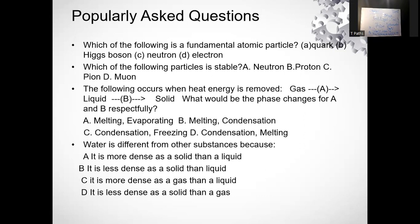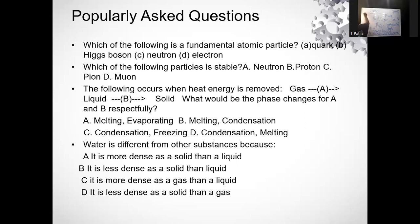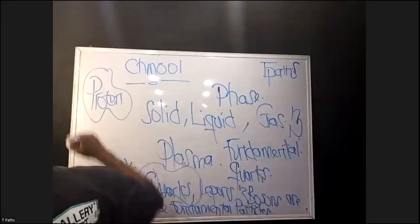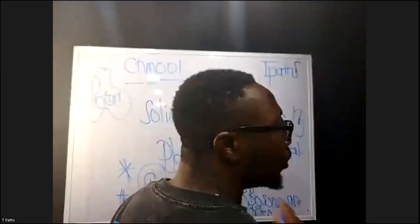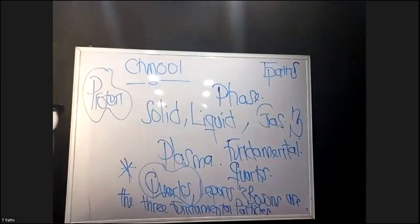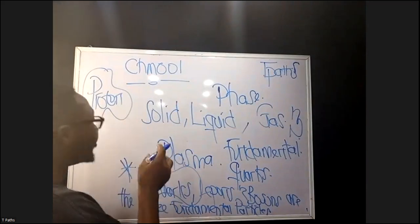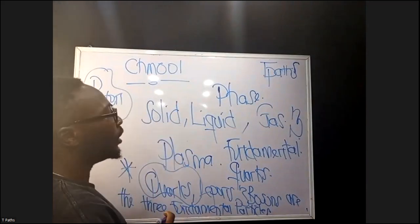The next question: which of the following particles is stable? Options are neutron, proton, pion, and muon. The answer is proton — proton is the most stable particle. Note that these protons and quarks are all fundamentals of matter, and they are mostly tested in objective questions.